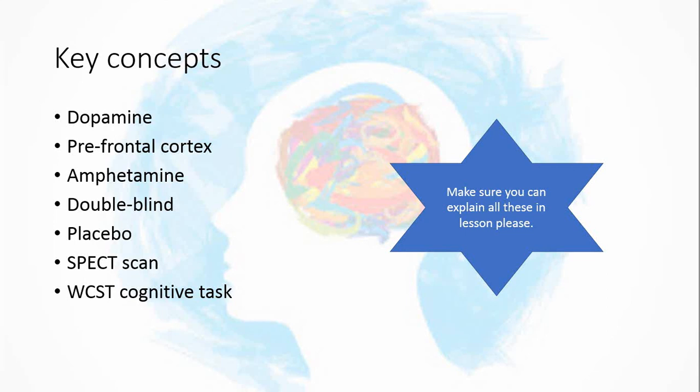The key concepts you need to know are: dopamine - be able to describe what it is; the prefrontal cortex; what an amphetamine is; how to describe a double-blind procedure and a placebo; what a SPECT scan is, even if you can't remember what it stands for; and what the card sort task is. Please make sure you can do all of those for next lesson. Thank you, bye-bye.